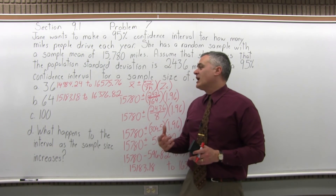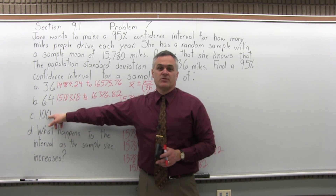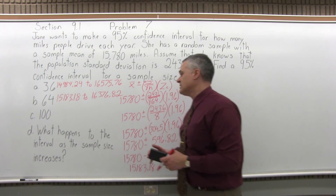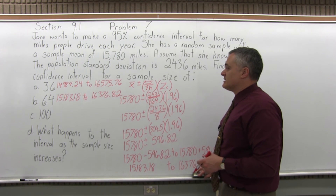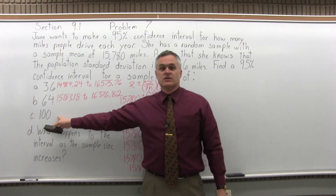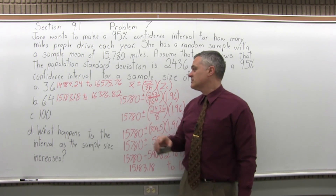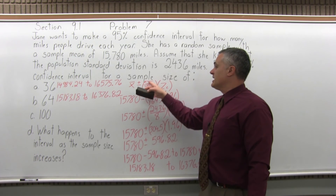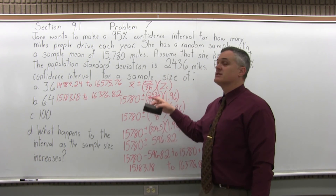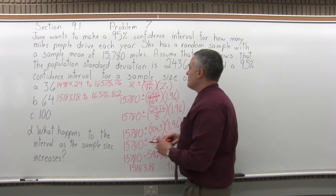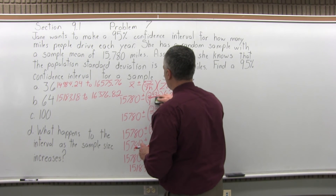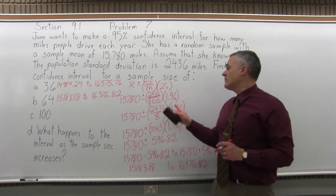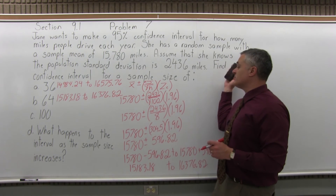For part C, I would imagine that making the sample size even bigger — pushing it up to 100 — will make the distance between the lower end and the upper end even a little smaller still. Let's see if that's what actually happens. Again, it's still the same confidence interval formula. X-bar is still 15,780, sigma is still 2,436, but n changes from 64 to 100. Z sub c, the confidence coefficient, is still 1.96, because we still have a 95% level of confidence.